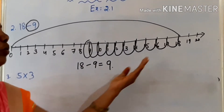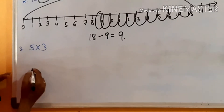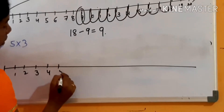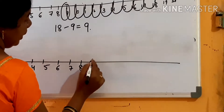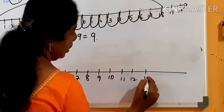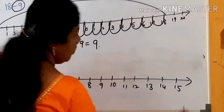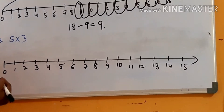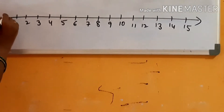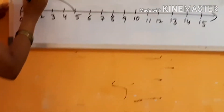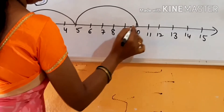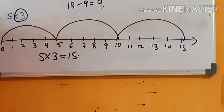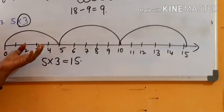Next is multiplication. We take 15 whole numbers on the number line. For 5 into 3, we move 5 steps each time and repeat 3 times: 1, 2, 3. So 5 into 3 is equal to 15. This is how we do addition, subtraction, and multiplication on the number line.